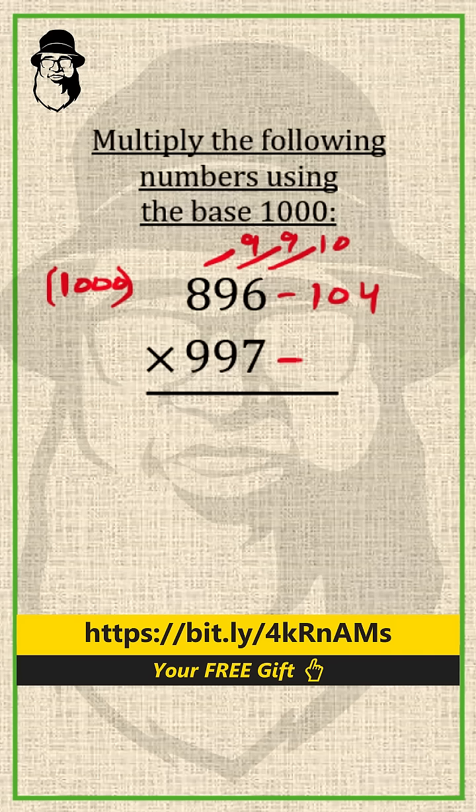And here also we do the same thing. 9 from 9 is 0. Then 9 from 9 is 0, and 7 from 10 is 3. We do all from 9 and the last from 10. Now as you know there is cross subtraction.